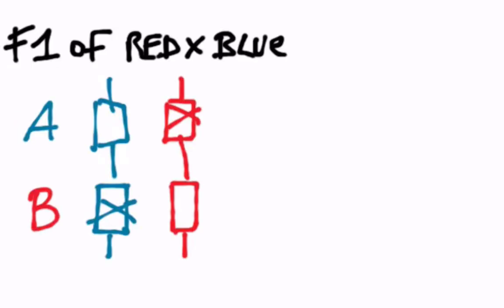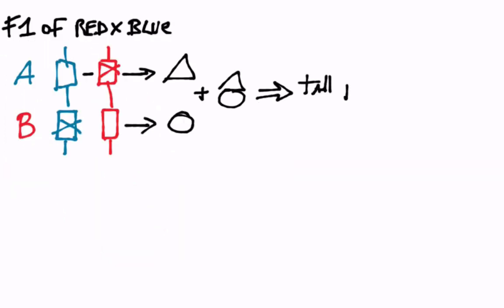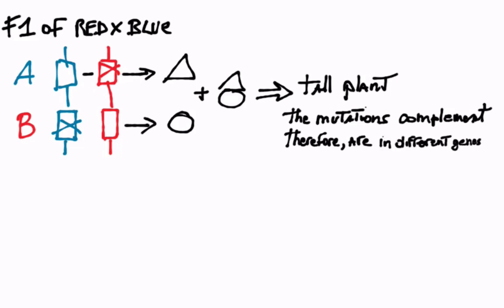We now cross the red and the blue mutants producing an F1 that is heterozygous for both genes. In the cell of the hybrid there is a good copy, that is an allele of A and a good copy of B. The protein complex is made and it results in a tall plant. We can say that the red and blue mutants complement and thus are in different genes.